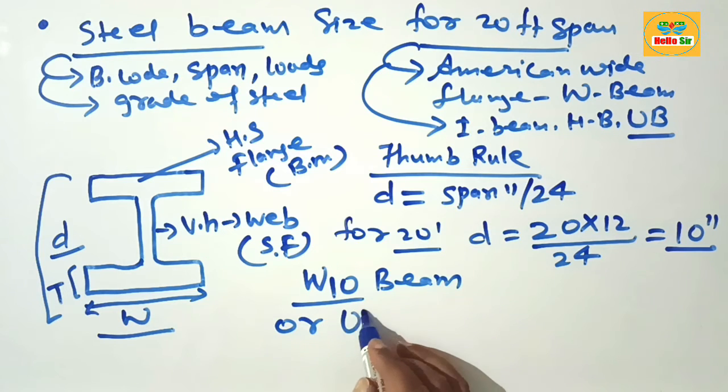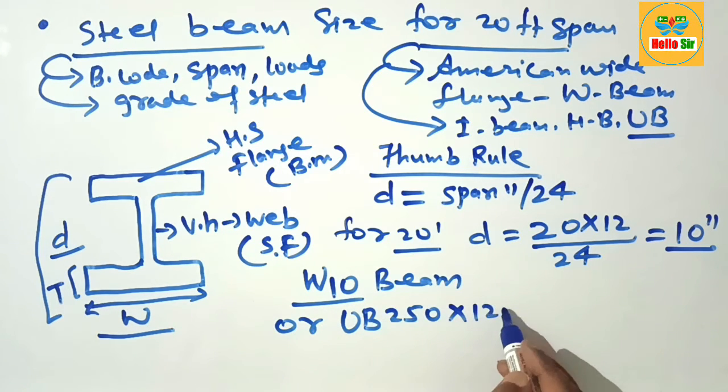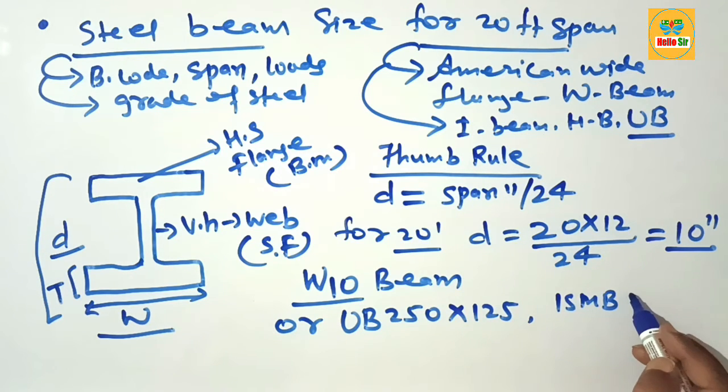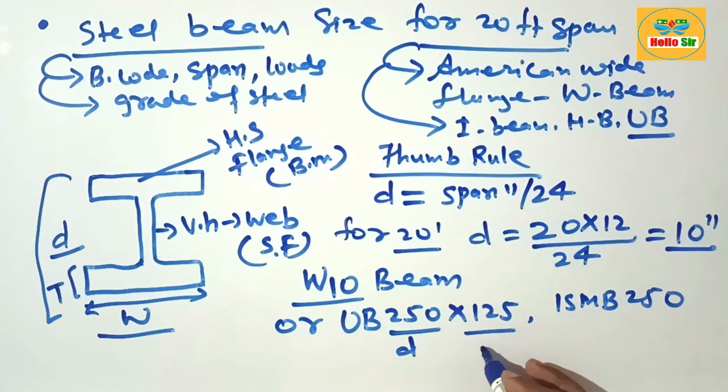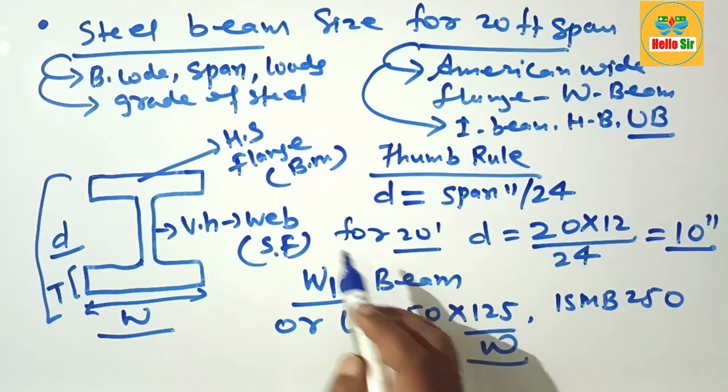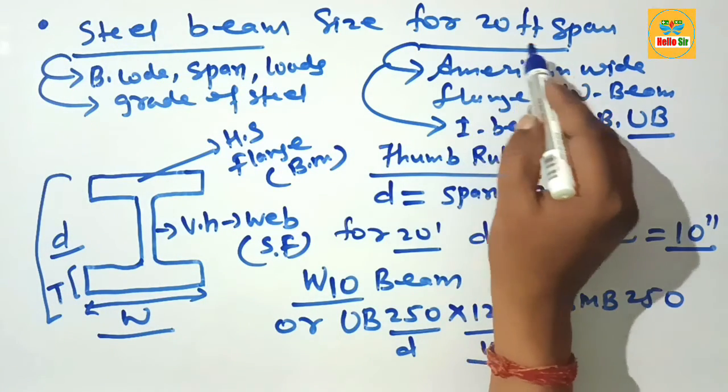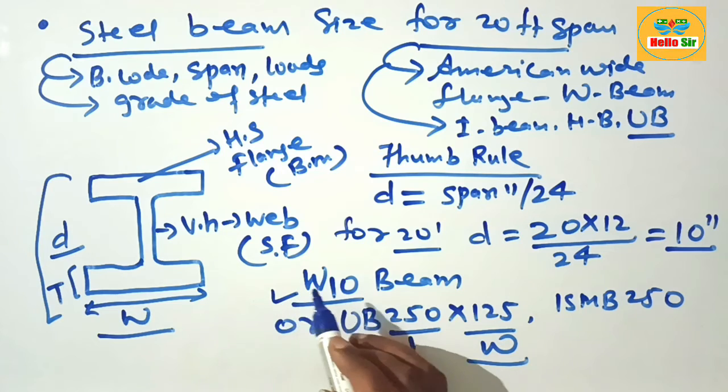125 is the width of beam. To answer the question: what size steel beam is required for 20-foot span? You need a W10 American wide flange beam for a span length of 20 feet, or a UB 250x125 where 250 is depth and 125 is width